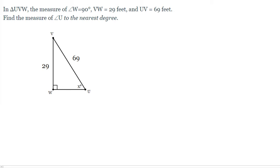So in other words, we need to find what x is. Notice that we have side VW, which is 29, and that represents the opposite side of angle U. And then 69 is the hypotenuse, so that's going to be sin of x degrees is opposite over hypotenuse.